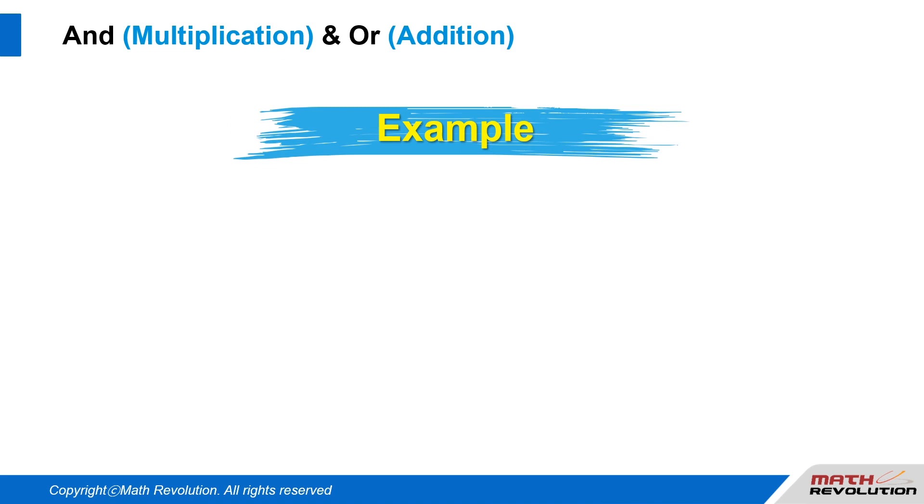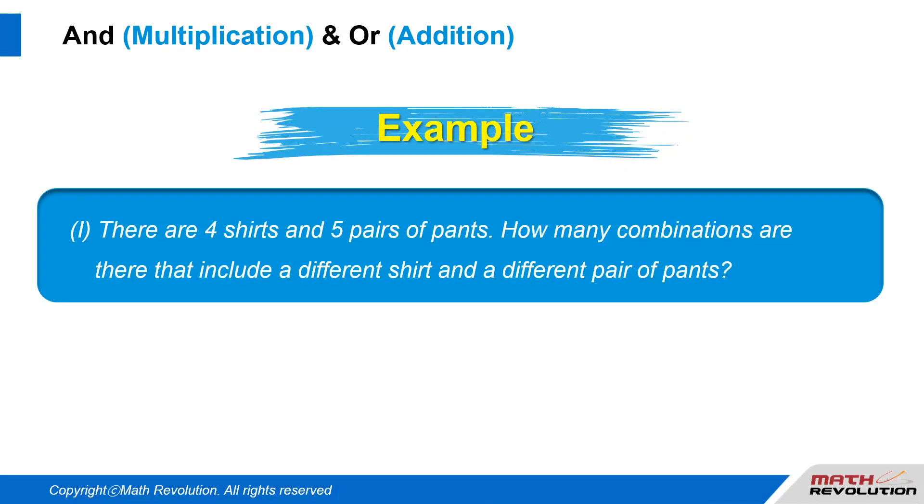For example, there are four shirts and five pairs of pants. How many combinations are there that include a different shirt and a different pair of pants?